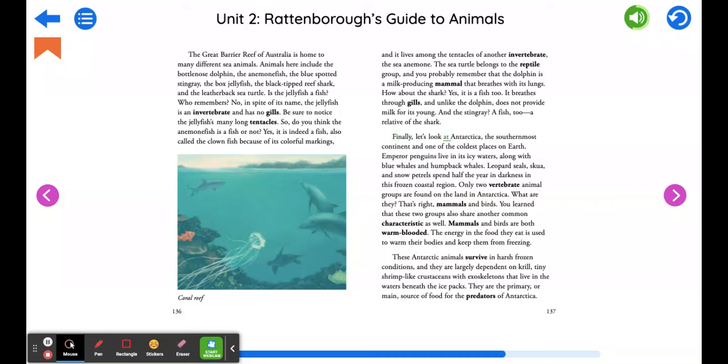Finally, let's look at Antarctica, the southernmost continent and one of the coldest places on Earth. Emperor penguins live in its icy waters along with blue whales and humpback whales. Leopard seals, skua, and snow petrels spend half the year in darkness in this frozen coastal region. Only two vertebrate animal groups are found on the land in Antarctica. What are they? That's right, mammals and birds.